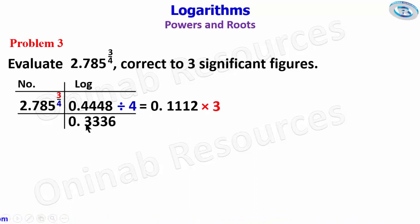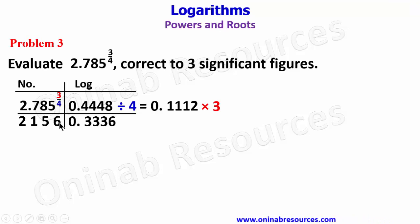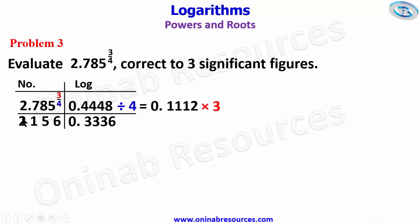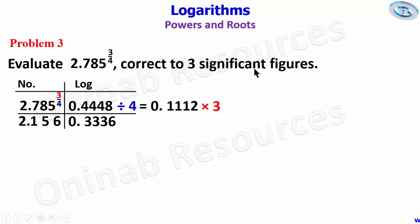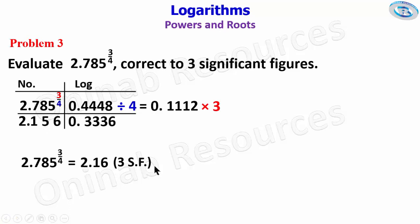We now find the antilogarithm of 0.3336. We keep the integer part and look for 0.33 under 3, differences of 6, from the antilogarithm table, and that gives 2156. Adding 1 to the integer part: 0 plus 1 is 1. We count the first digit and place the decimal point, giving 2.156. Correcting to 3 significant figures: since the digit after is 6, which is more than 5, we round up the 5 to give 2.16 to 3 significant figures.